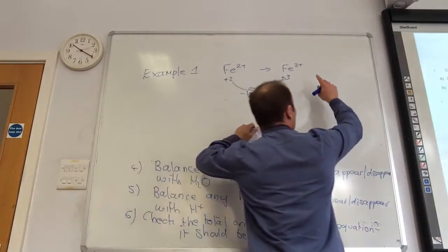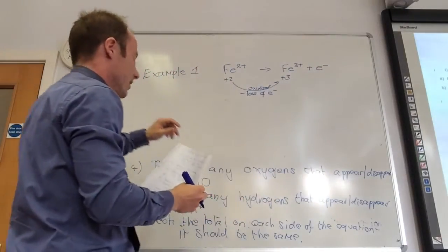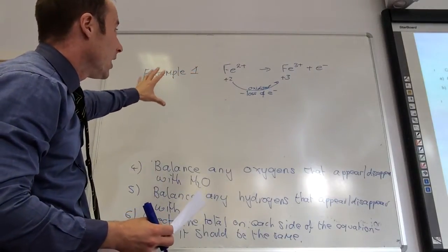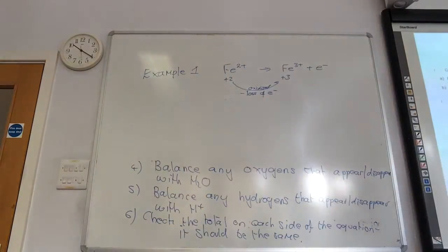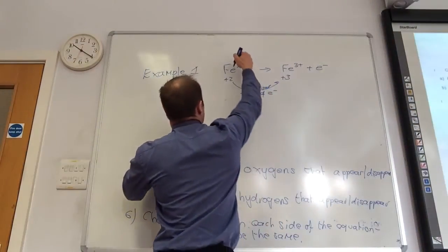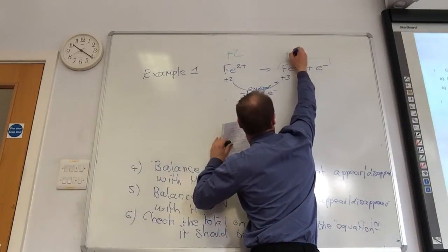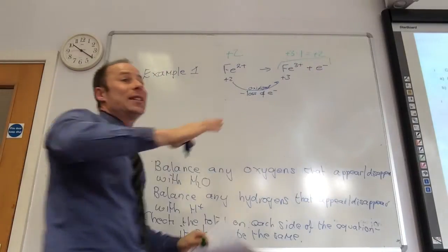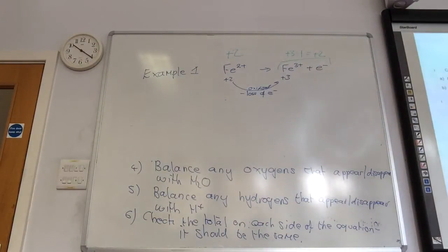Now, I need to put my electrons. I'm going to put my electrons on this side. So, plus an electron. Have I got any oxygens happening? No. Any hydrogens? No. So, final check. Let's just add up how many pluses and minuses I have. This side I have got +2. On this side, I have got +3 minus 1, which equals +2. So, it's the same on both sides. Thumbs up.